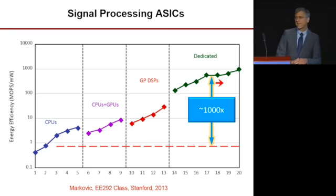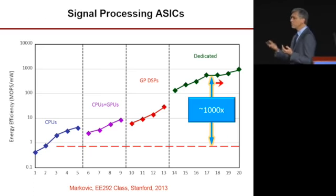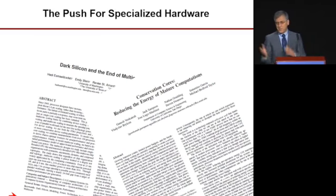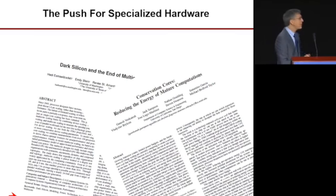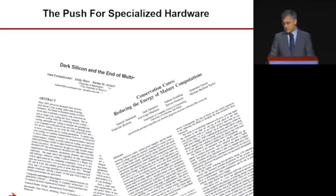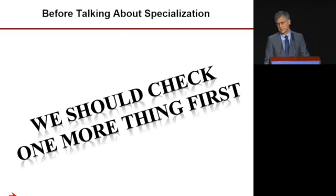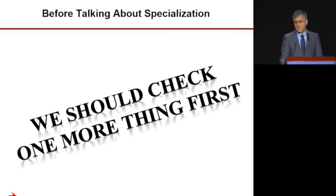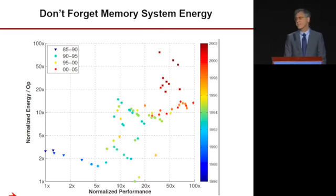To increase performance we need to decrease energy per op, so it definitely seems we should look at specialized hardware. We see many papers about dark silicon and the rise of specialization and specialized computing cores — it's a very hot topic in the architecture space. But before we talk about specialization, there's one thing we should check first: we shouldn't forget about the memory energy.